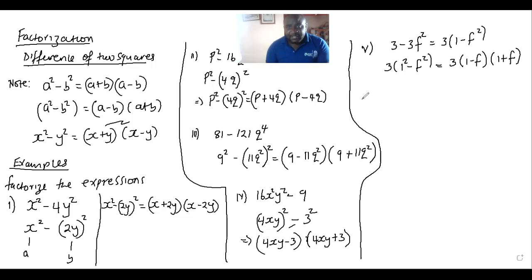So lastly, on this one, I can have 100x to the square minus 1. Still this one can be considered having 1 as a square, which will take us to 100x squared minus 1 squared. And this would give us 10x plus 1 times 10x minus 1. That is how you factorize that expression using what we call the difference of two squares.